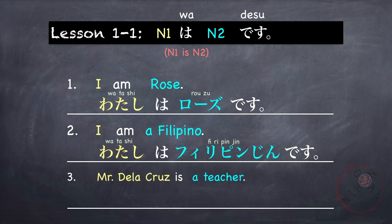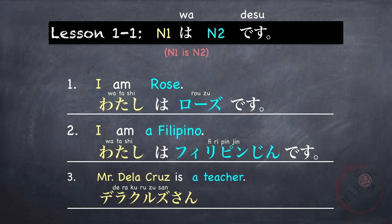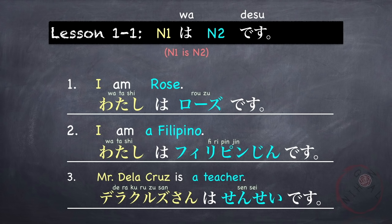Our third example is 'Mr. Delacruz is a teacher.' In Japanese, Delacruz san. A teacher — we are talking about another person, so we use the word sensei. If you are talking about yourself, it's kyoshi. So the full sentence is: Delacruz san wa sensei desu. Mr. Delacruz is a teacher. I hope this is clear.